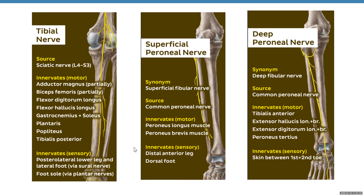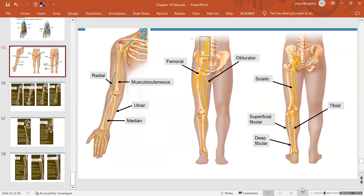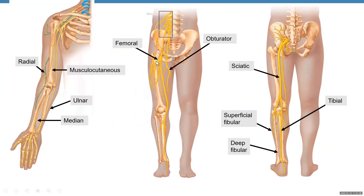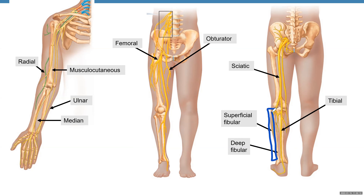To summarize the lower extremity nerves: femoral nerve innervates the anterior compartment of the thigh; obturator nerve innervates the medial compartment; sciatic nerve innervates all the posterior compartment of the thigh and leg, plus the lateral compartment and anterior compartment of the leg via its branches — deep fibular innervates the anterior compartment, superficial fibular innervates the lateral compartment, and tibial innervates the posterior compartment.